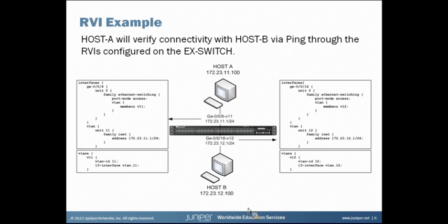Let's run through an example. In the diagram shown here, we have two hosts. Host A with IP address 172.23.11.100 and Host B with IP address 172.23.12.100. The simple goal here is to get these two devices, which are on different subnets and different VLANs, to communicate via ping. Okay, let's get started.